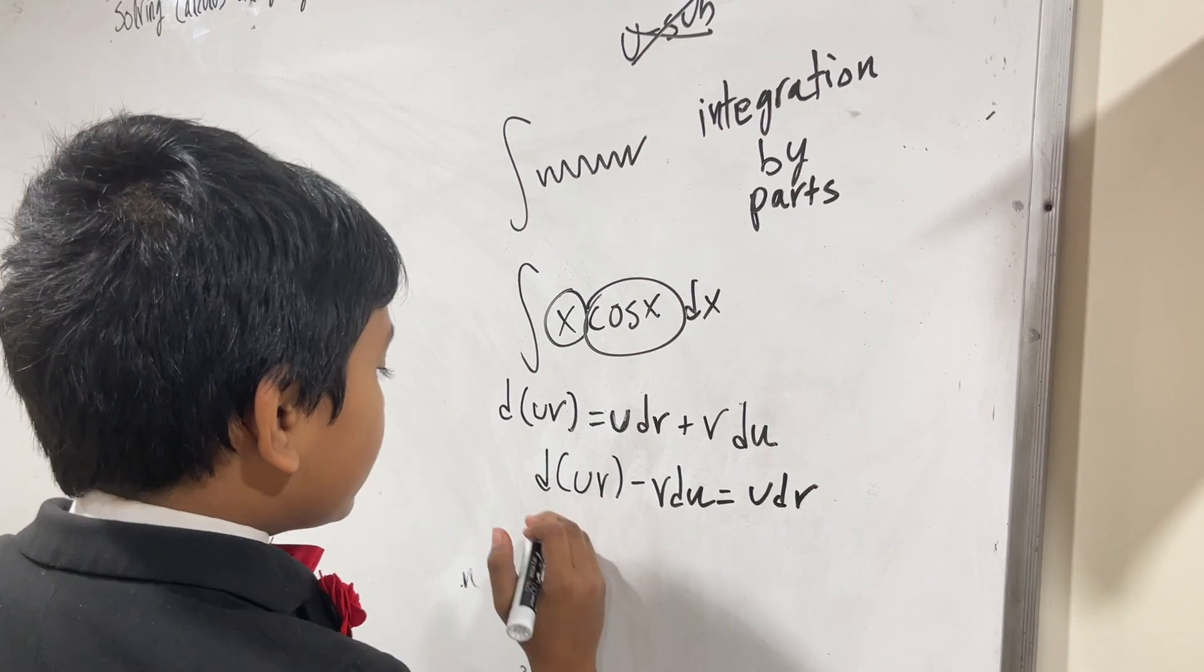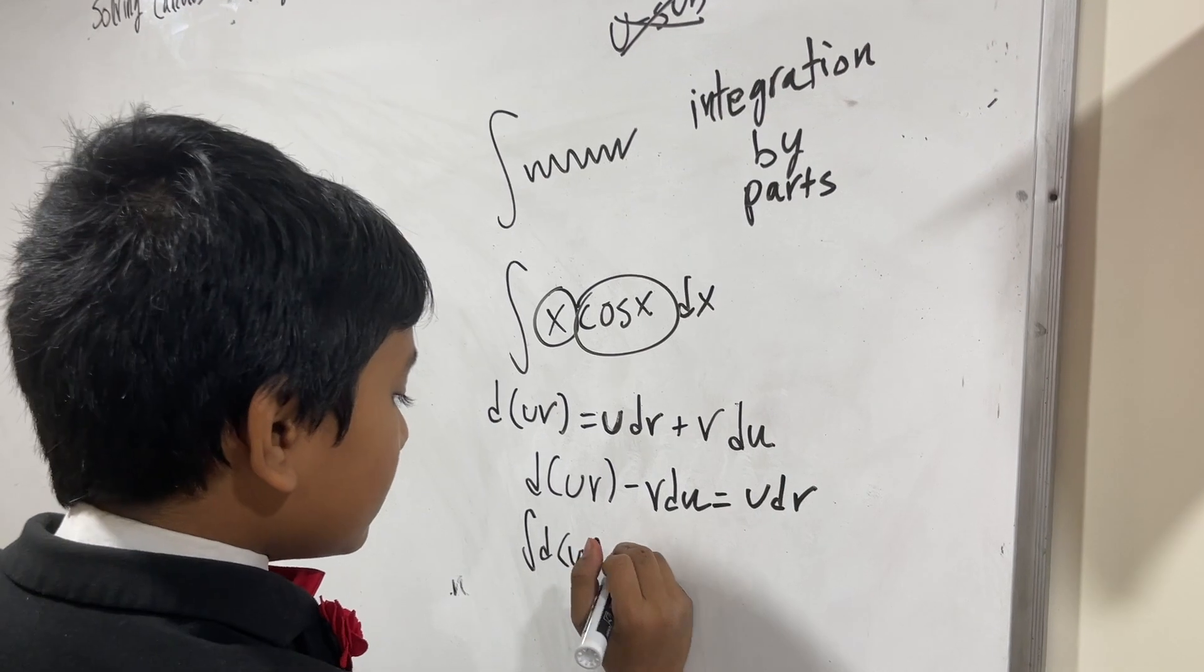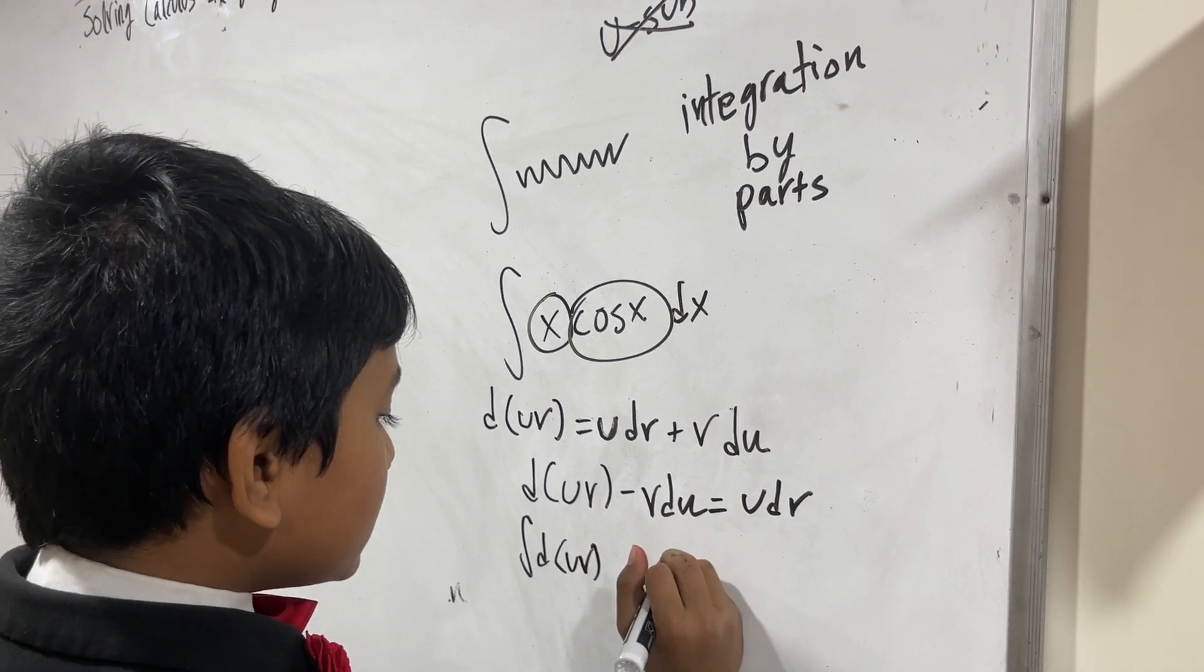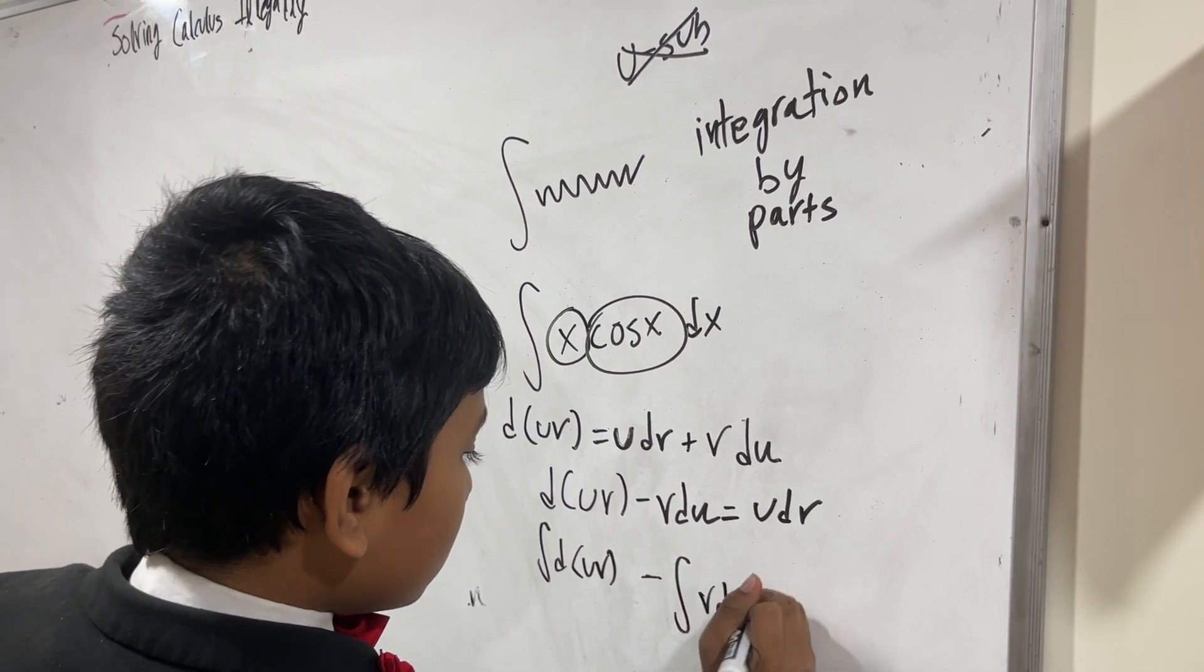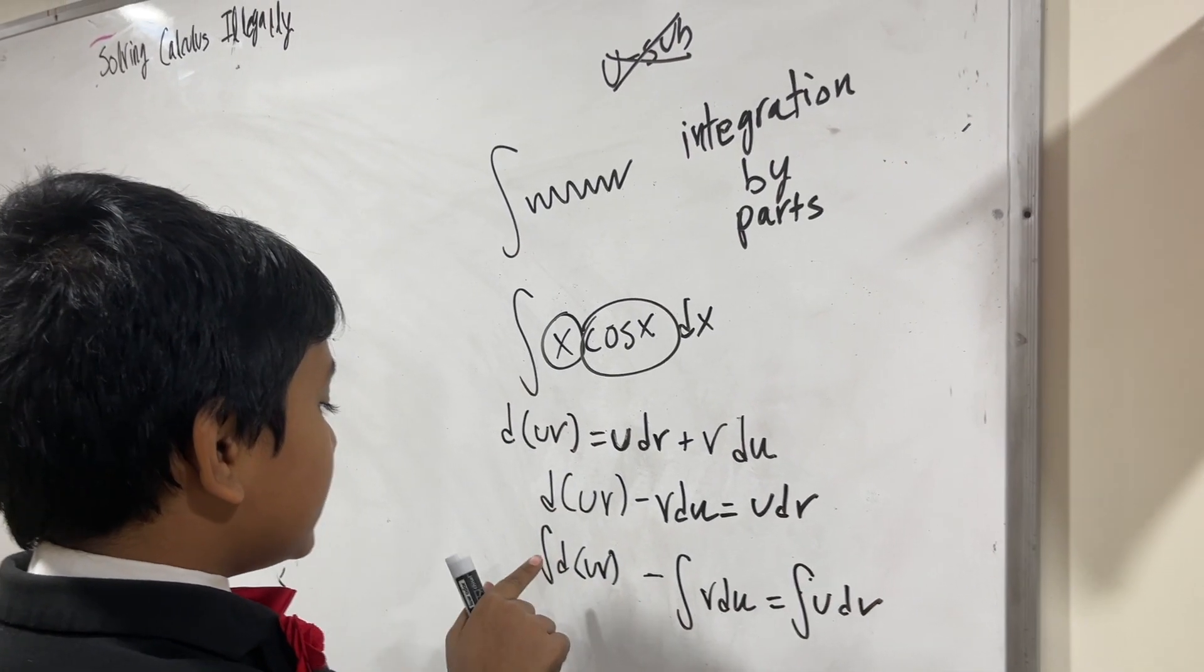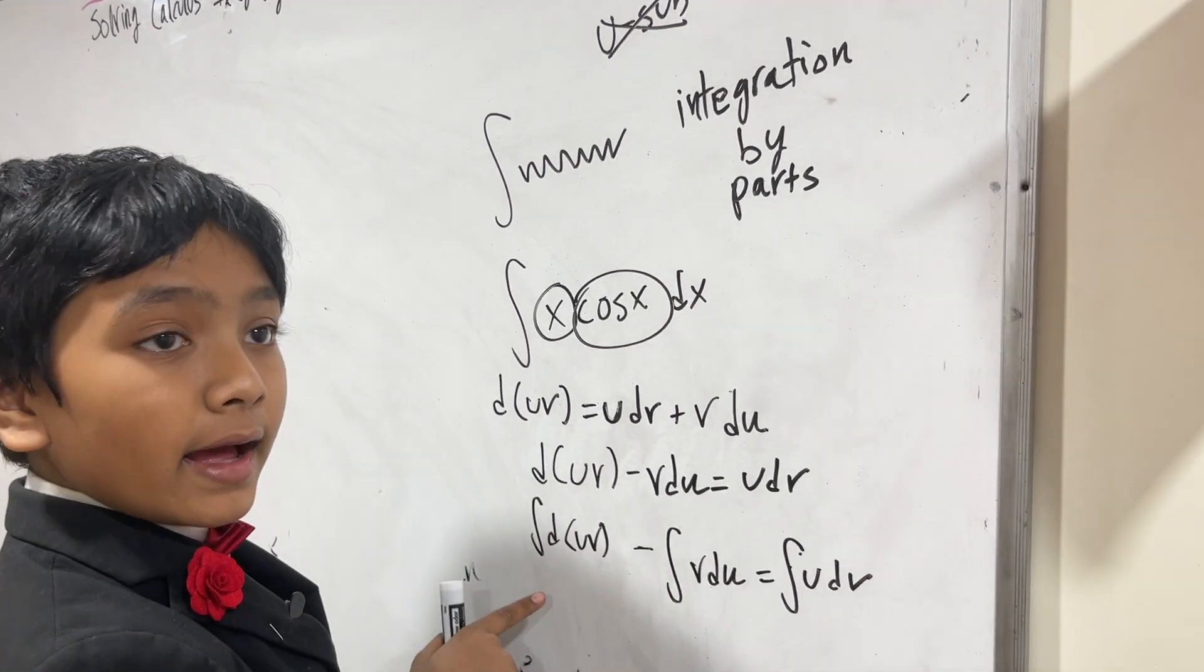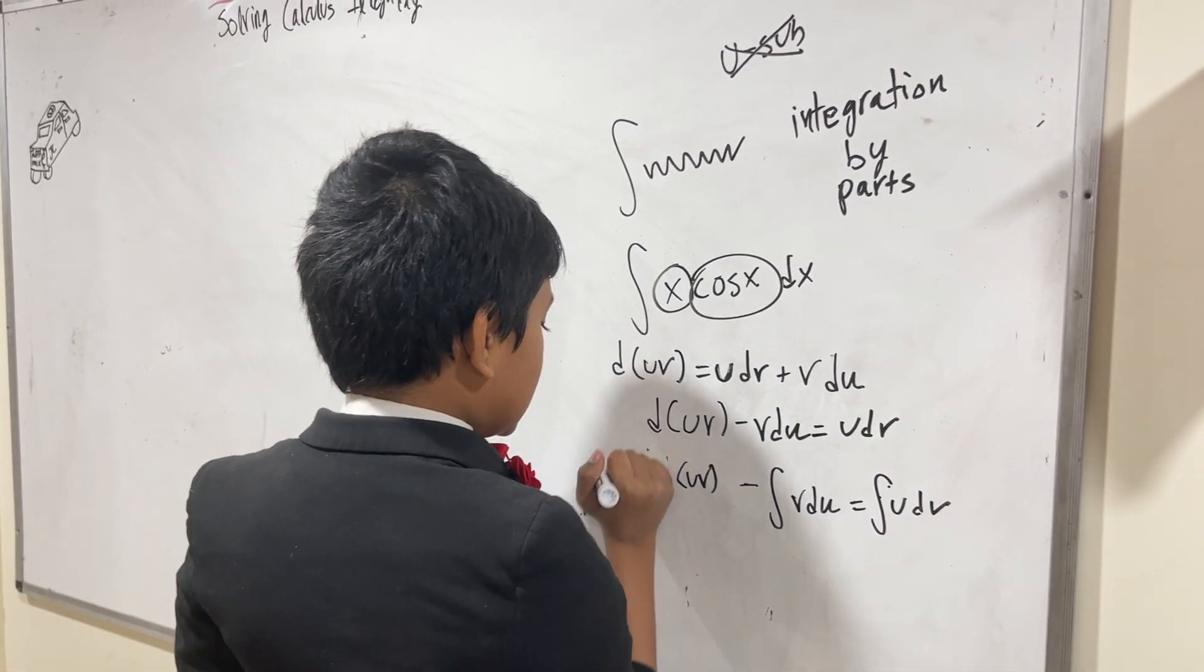Now we integrate both sides of this equation. We get the integral of d(uv) minus the integral of v du equals the integral of u dv. You might notice this d and this integral cancel out, because derivative and anti-derivatives of course must cancel out.